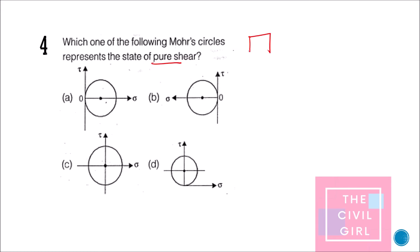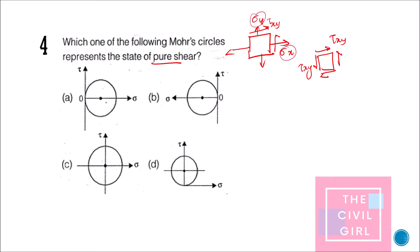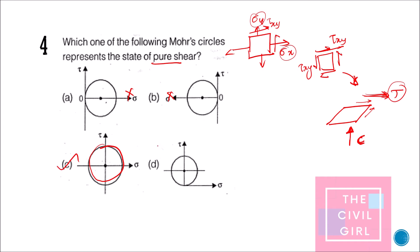Next question: which Mohr's circle represents the state of pure shear? In pure shear, only tau_xy is acting — there is no sigma x or sigma y. The element shears so that in one diagonal direction it becomes tensile and in the perpendicular direction it becomes compressive. The Mohr's circle for pure shear is centered at the origin with equal tension and compression, so the correct option represents that case.